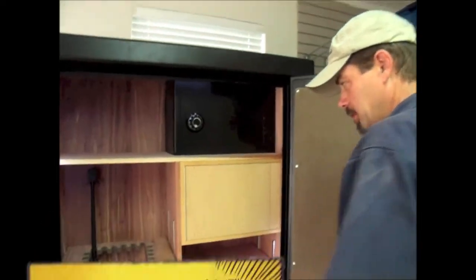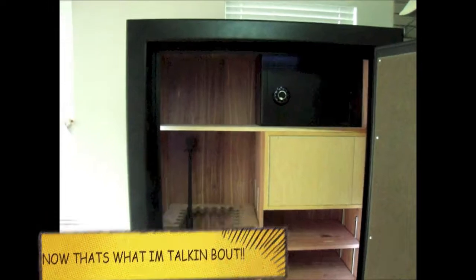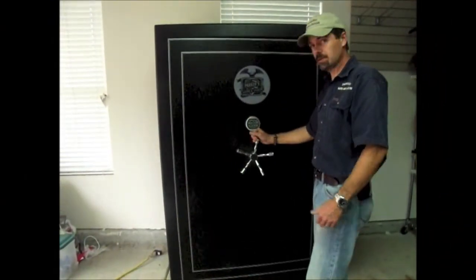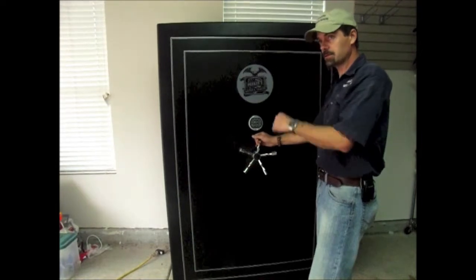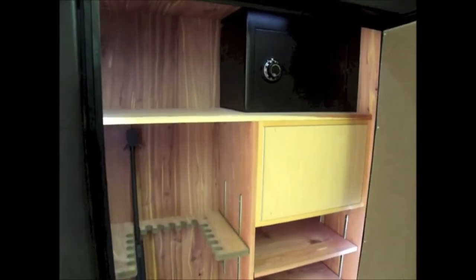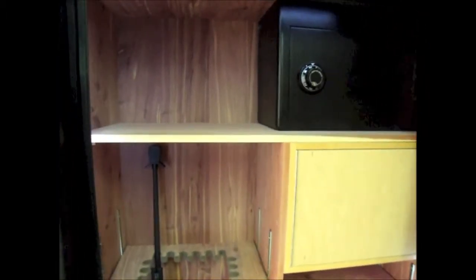This holds 16 long guns as it sits. This safe is 50 inches wide, 72 inches tall and 28 inches deep. Really nice safe and this is just an example of a custom safe on things that you can do to your safes. Wine cabinet, the illuminated lights he's got up top, he's got them on the side running down here.